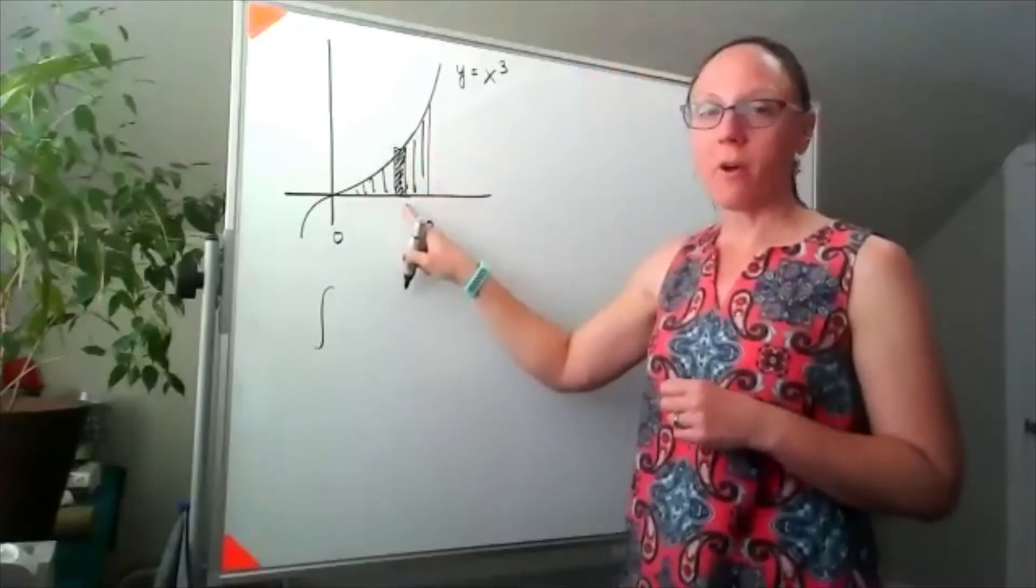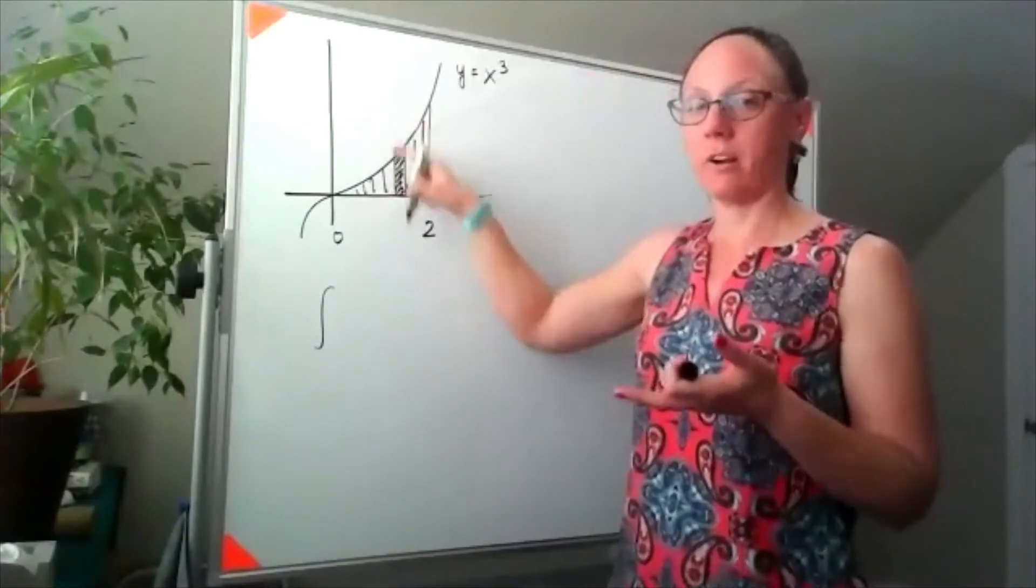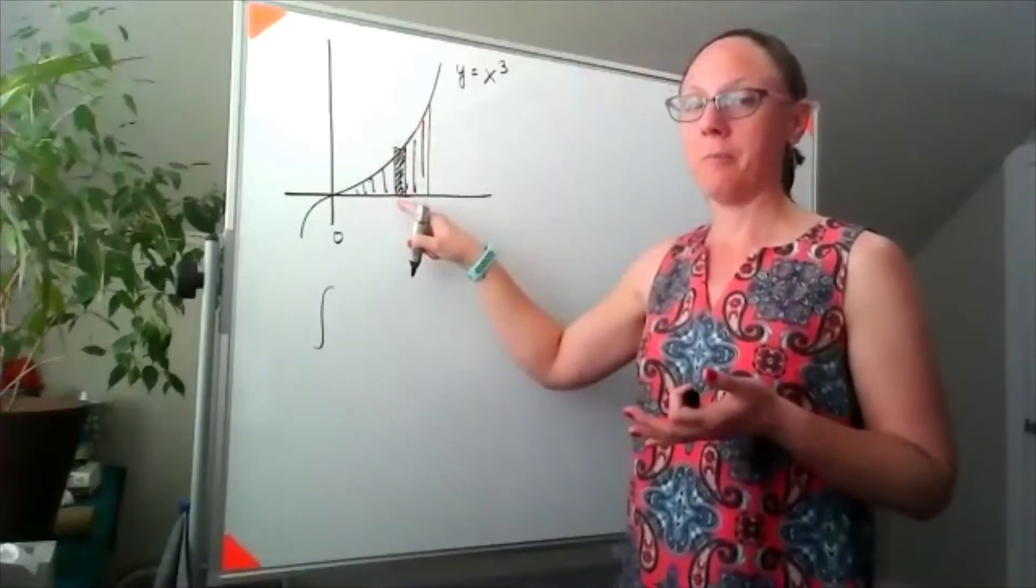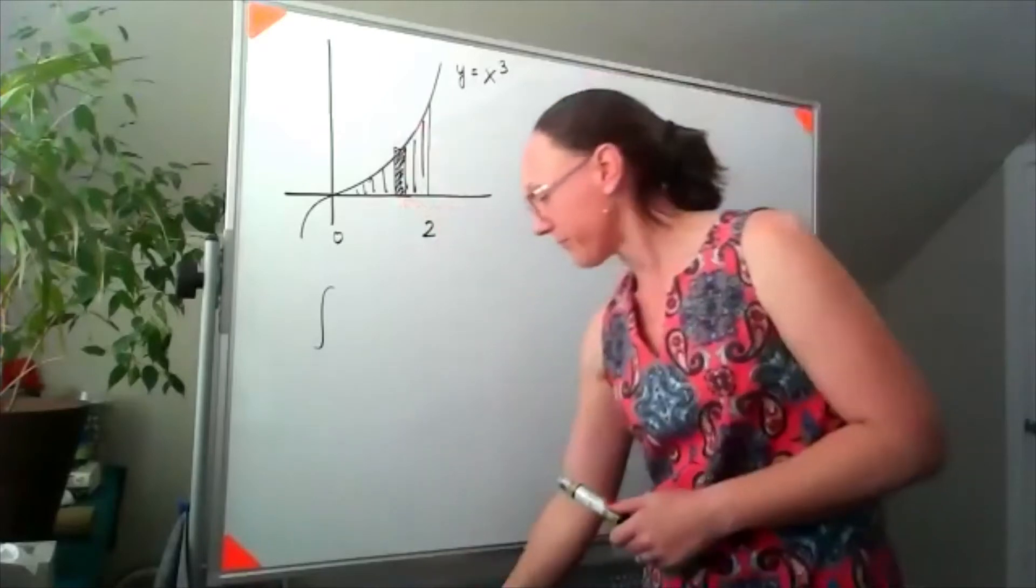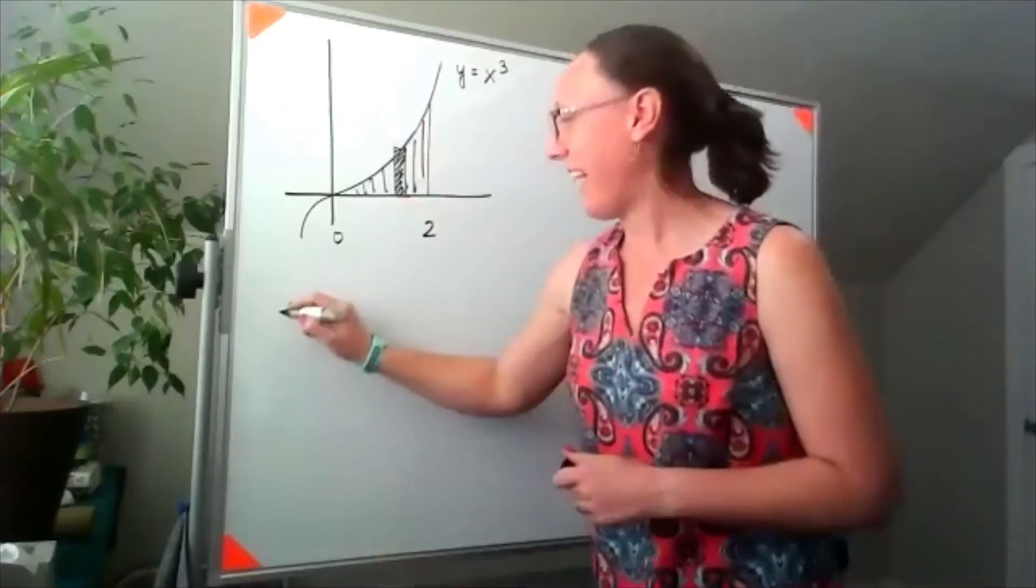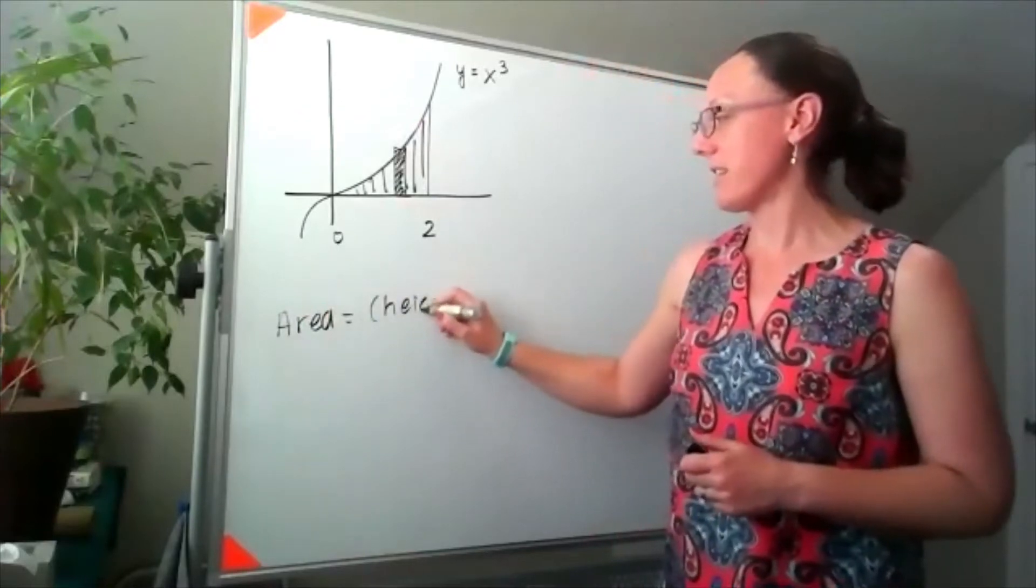If I think about our generic cross section, that shape, my arbitrary cross section here, is a rectangle. The area of a rectangle is the height times the base.